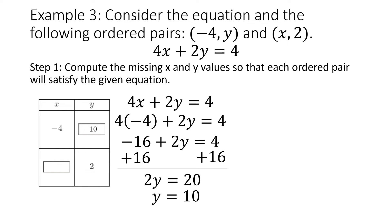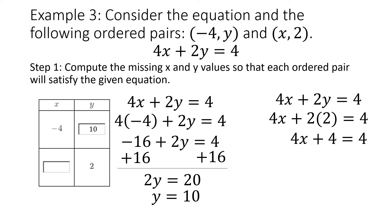Next I'm going to look at the next coordinate. I have 4x plus 2y equals 4, and I'm given 2 as the y value. So I'm going to substitute in 2 for my y, and I'm going to have 4x plus 4 equals 4. I'm going to subtract 4 on both sides, giving me 4x equals 0. Since 4 and x are being multiplied, I'm going to divide by 4 on both sides, giving me x equals 0. So my coordinates are negative 4 comma 10 for the first ordered pair, and 0 comma 2 for the second.